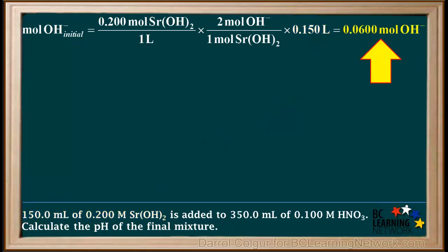When we multiply all three numbers, we get 0.0600 moles, so the initial moles of OH⁻ added is 0.0600 moles. Notice this is expressed to three significant figures, which is consistent with the given data.